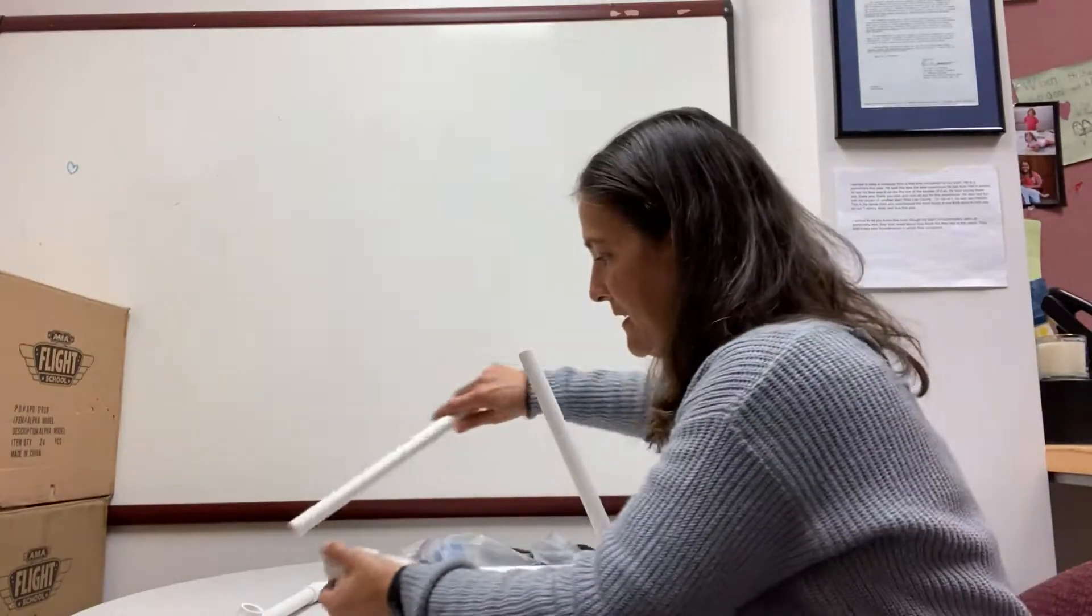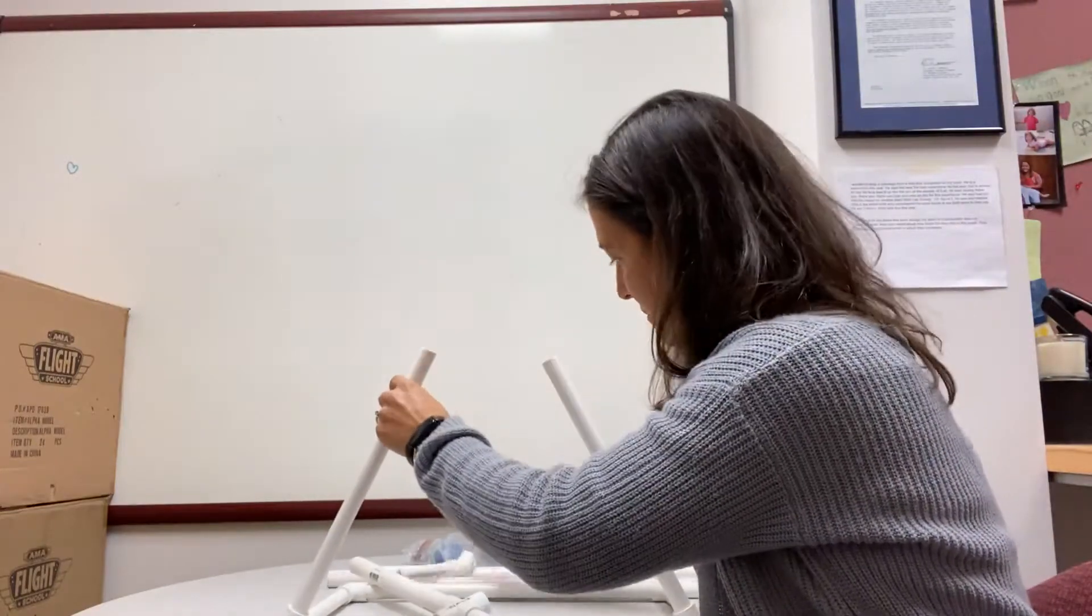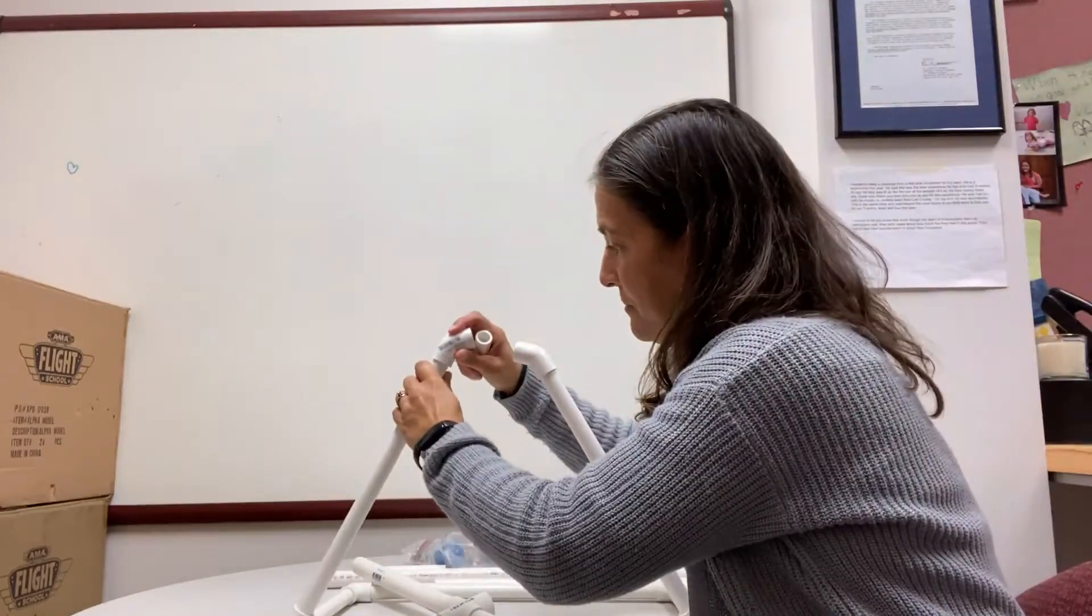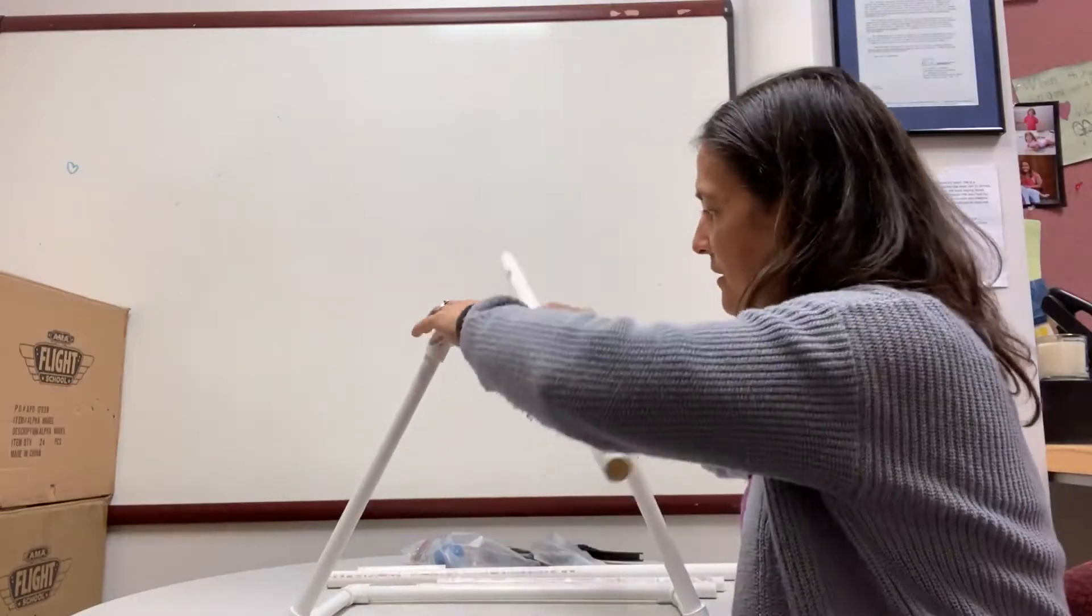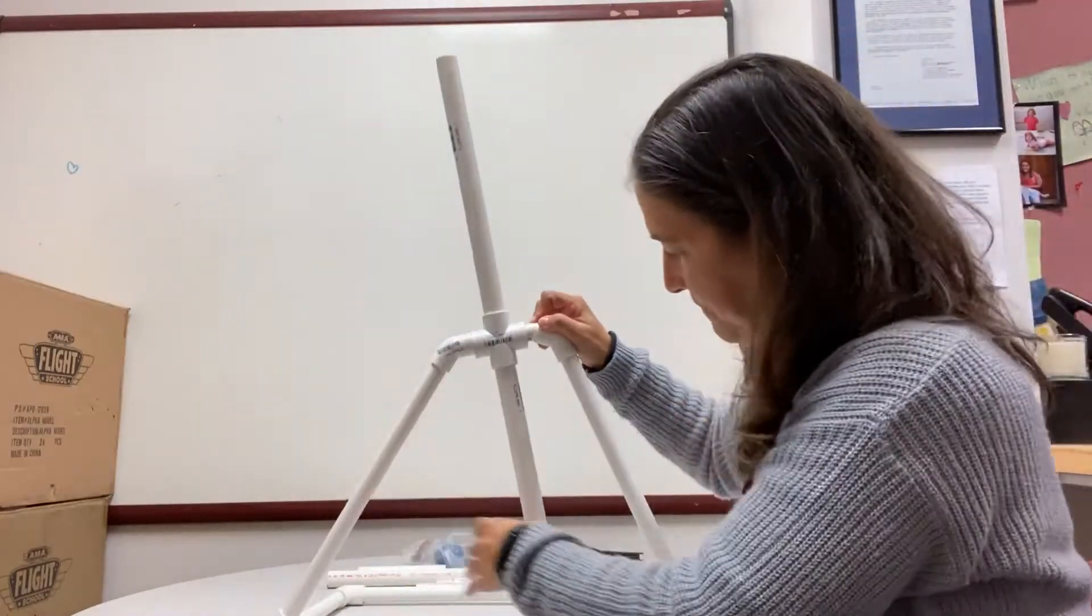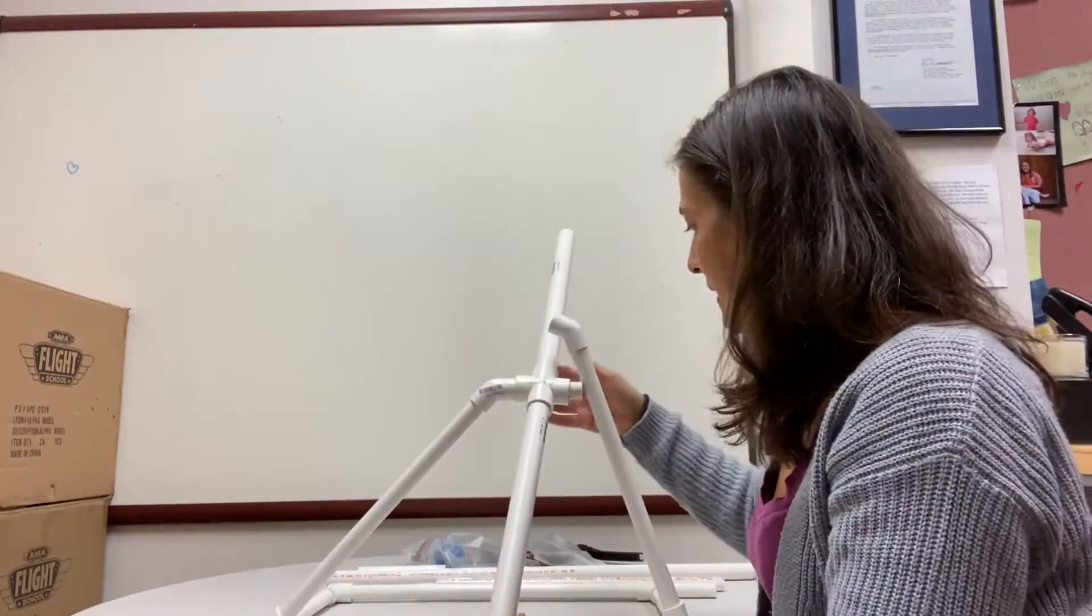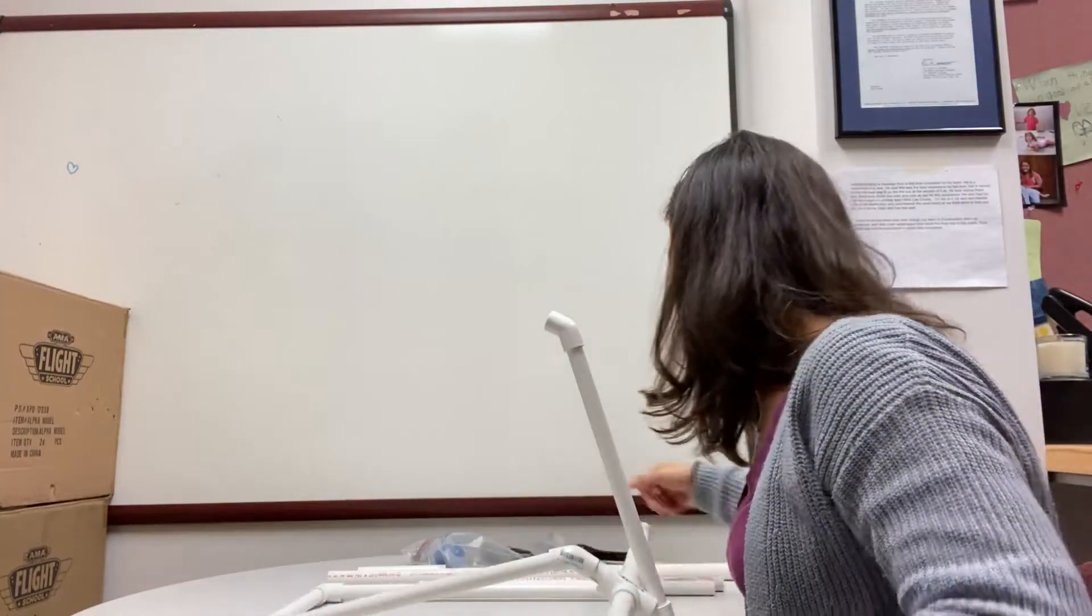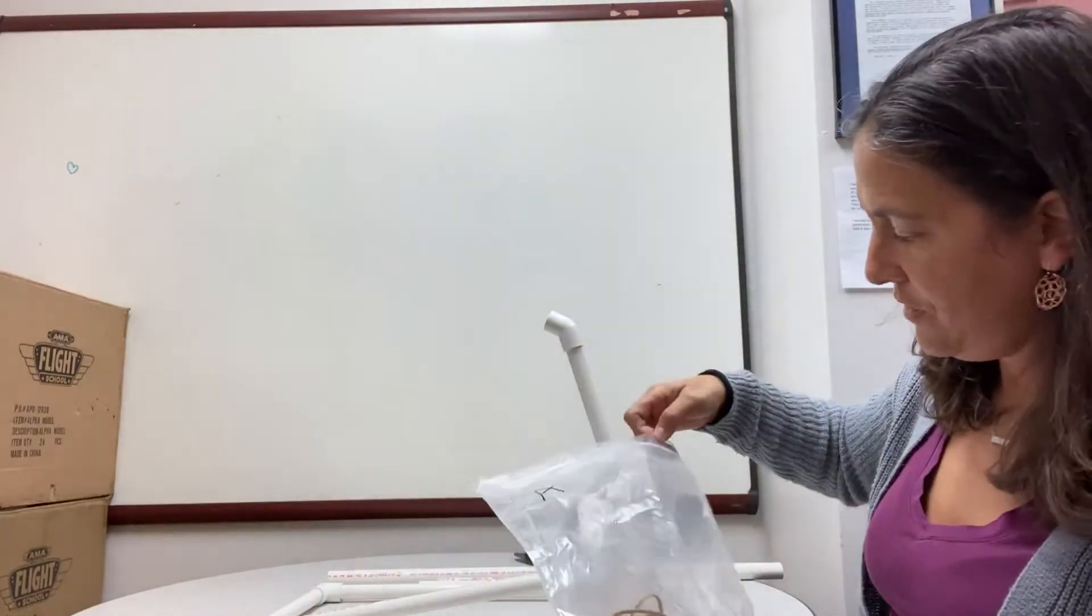If you decide to stick with PVC as your final design and you're feeling really good about what you've got, then you might want to get some PVC glue and make it a little more permanent, but you don't have to. Inside your bag, you also have some hooks.